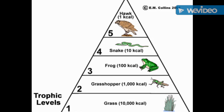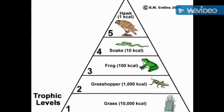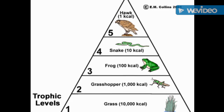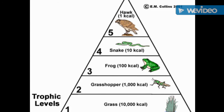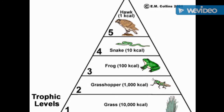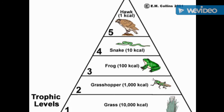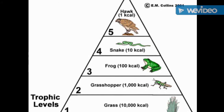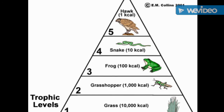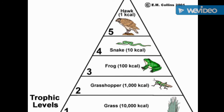Using an energy pyramid. An energy pyramid consists of four levels, each of them being labeled a trophic level. Your first level consists of your producers, who get their energy from the sun.